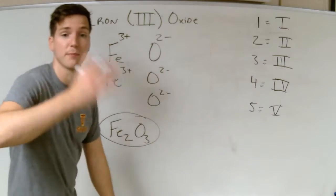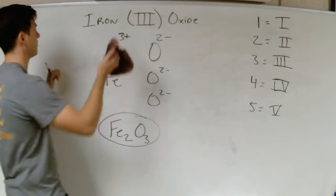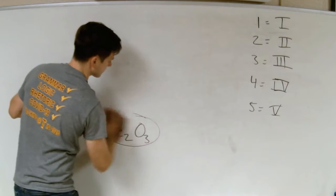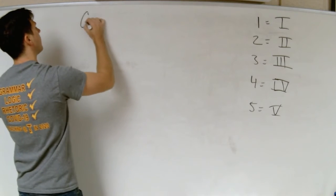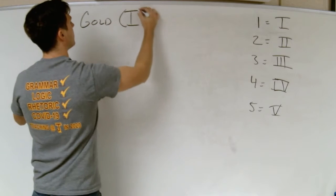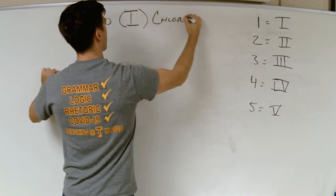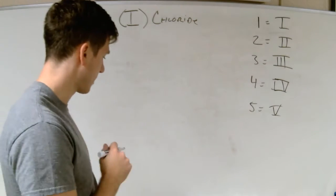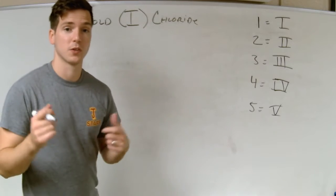Let's do a few more examples going from name to compound, and then we'll go from compound to name. Next: Gold(I) chloride.